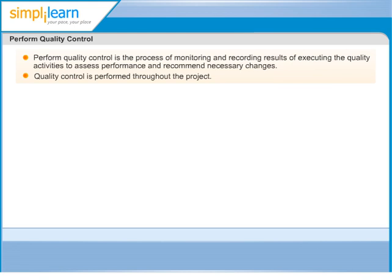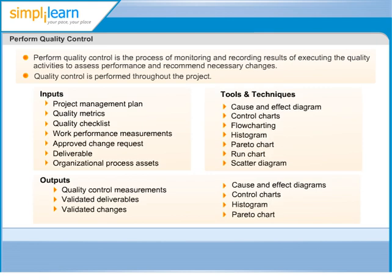Quality Control is done throughout the project. The project deliverables are inspected against the planned checklists. The Quality Metrics measurements are continuously done to see whether the project quality is improving or not. Quality Control activities result in recommended changes, corrective and preventive actions, and defect repair to the integrated change control process.